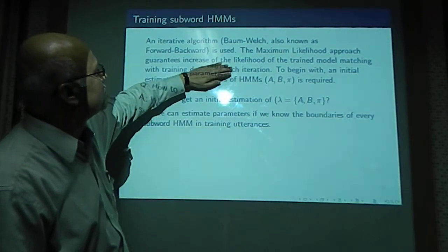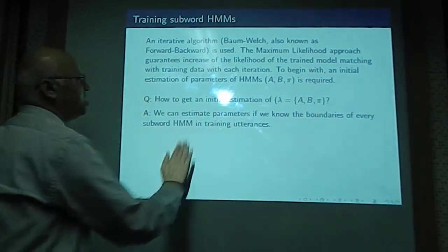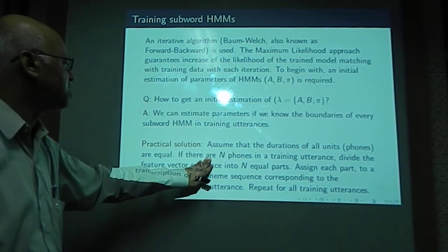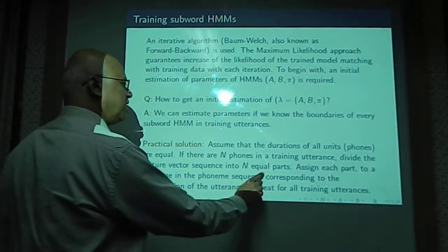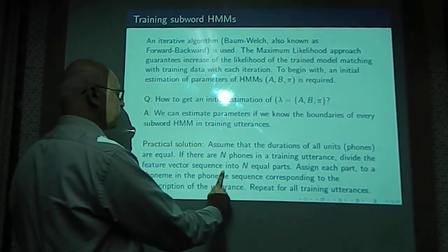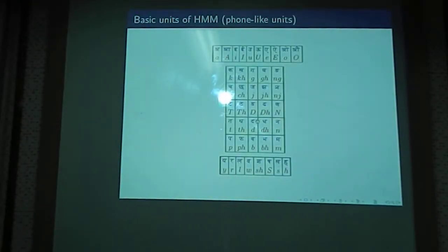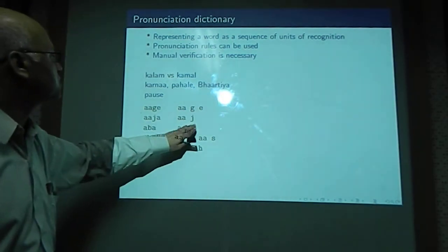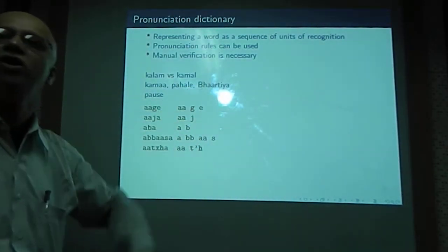As iteration increases, the model becomes better at explaining the training data. We always need an initial set of parameters. The assumption we make is that in one training utterance with capital N phones, all phones are of equal duration. We divide the training feature vector sequence into N equal parts and assign each part to a phoneme in the phoneme sequence. We also looked at the basic phoneme units used in our Indian alphabet and the pronunciation dictionary, which explains how a word is pronounced as a sequence of phonemes, accounting for pronunciation variations and letter-to-sound rules.